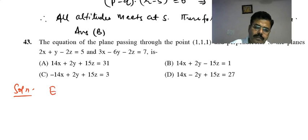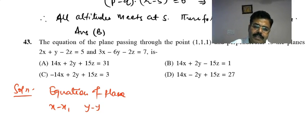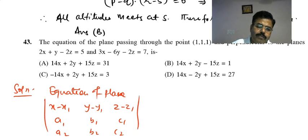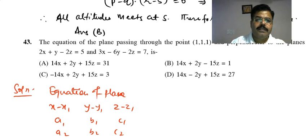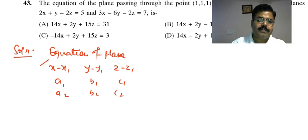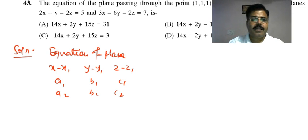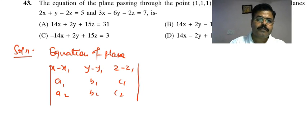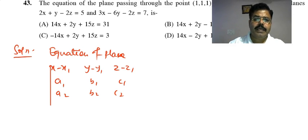The equation of a plane passing through point (x₁,y₁,z₁) and perpendicular to two lines with direction cosines (a₁,b₁,c₁) and (a₂,b₂,c₂) is given by the determinant: |x-x₁, y-y₁, z-z₁; a₁, b₁, c₁; a₂, b₂, c₂| = 0.